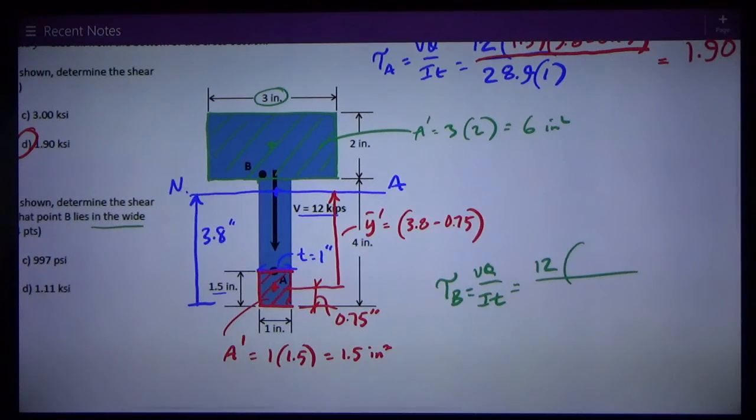Y bar prime is the distance from the centroid of A prime, right here, to the neutral axis. So that is Y bar prime for B.